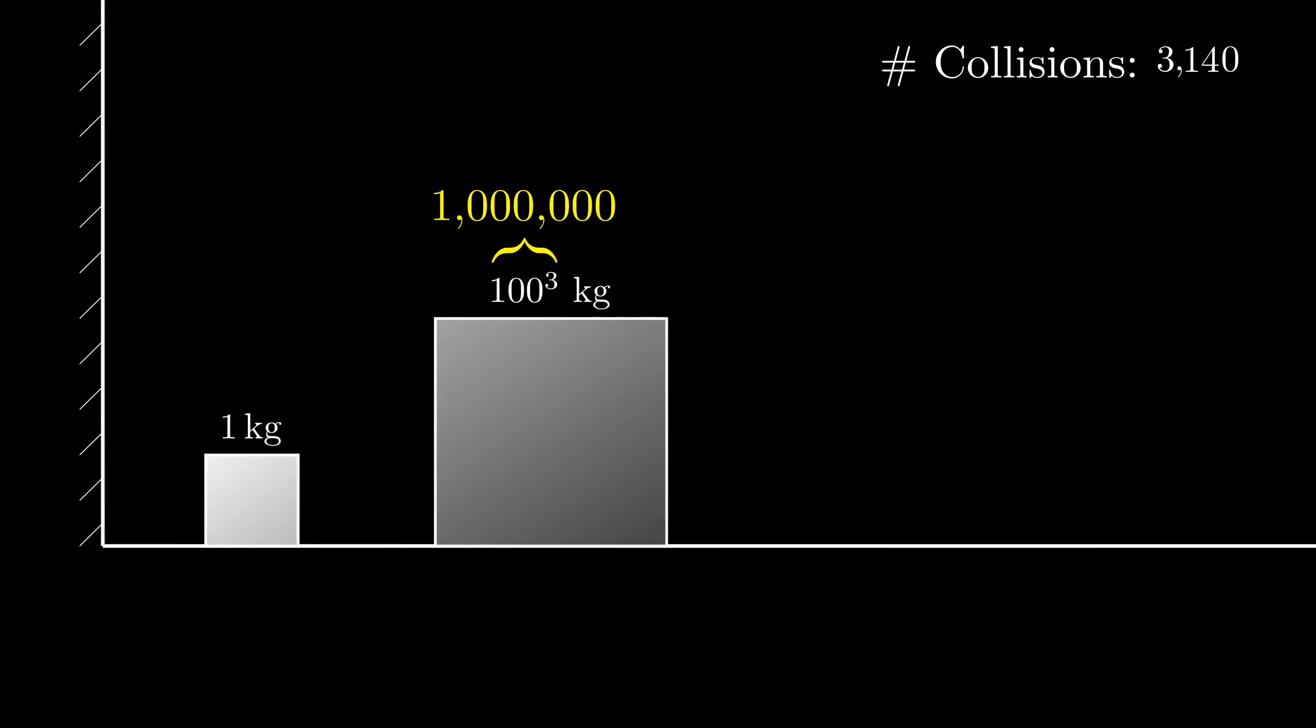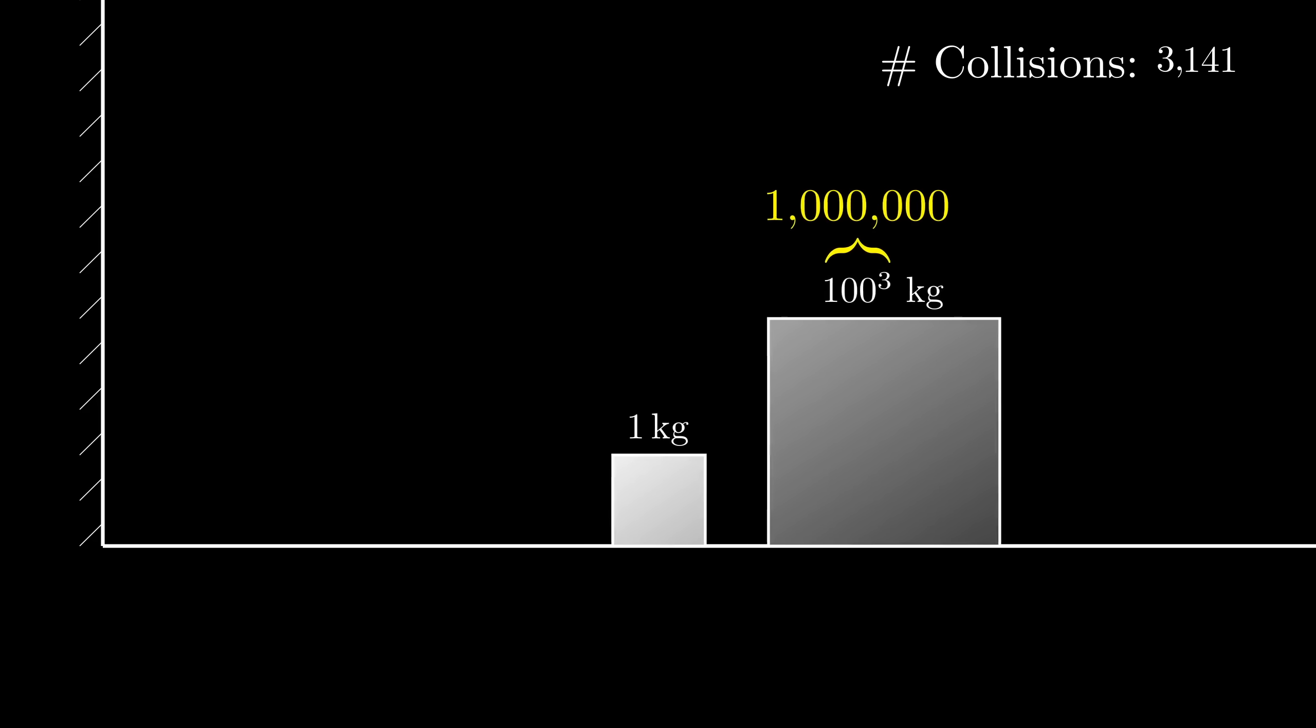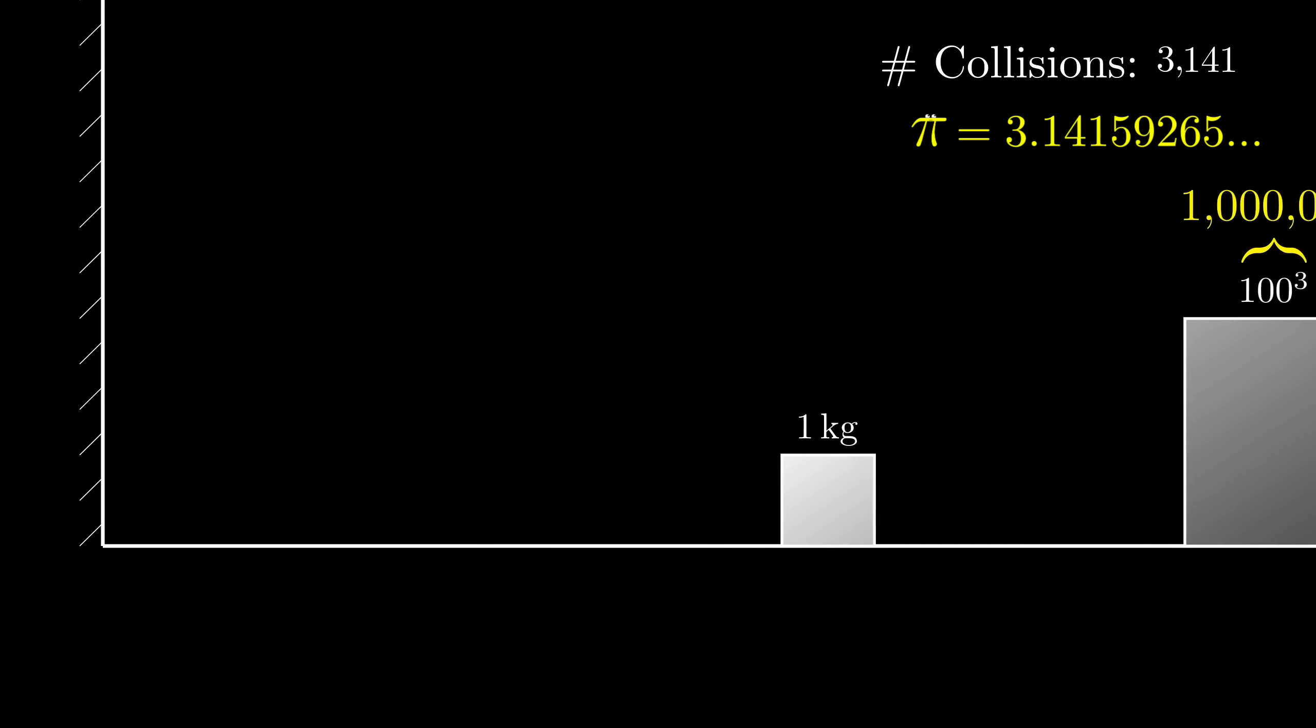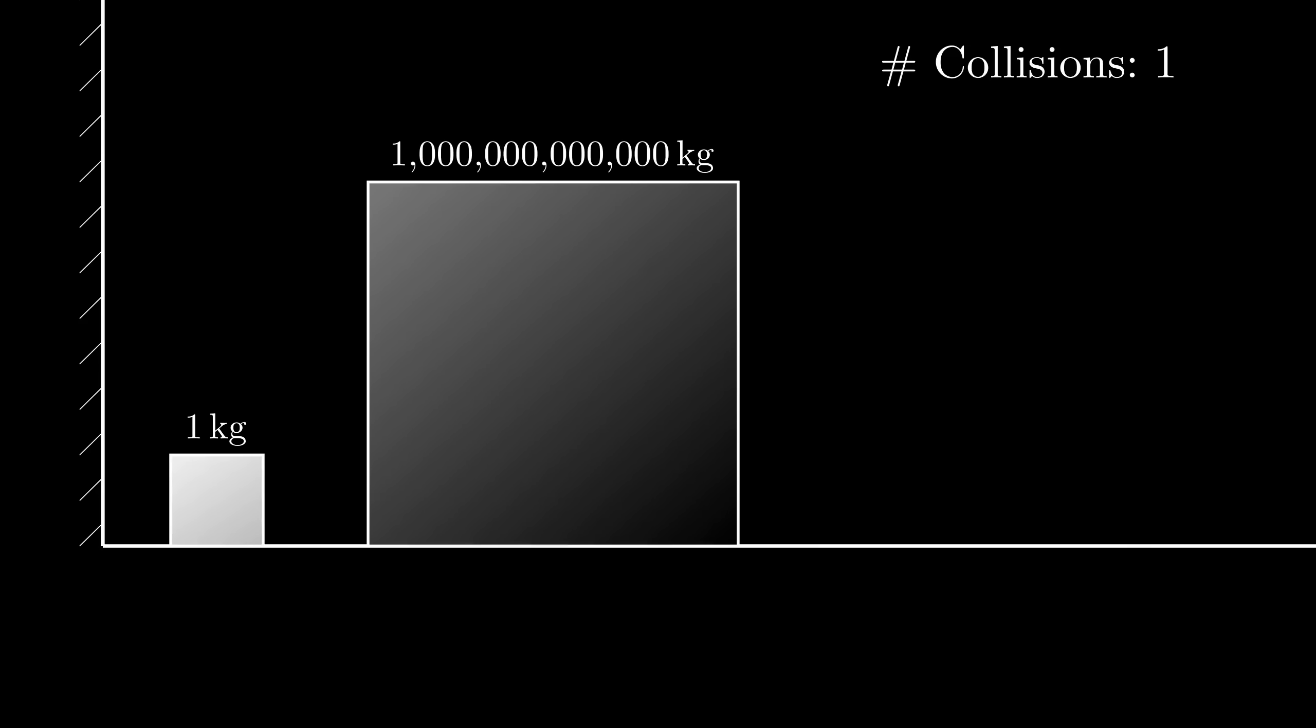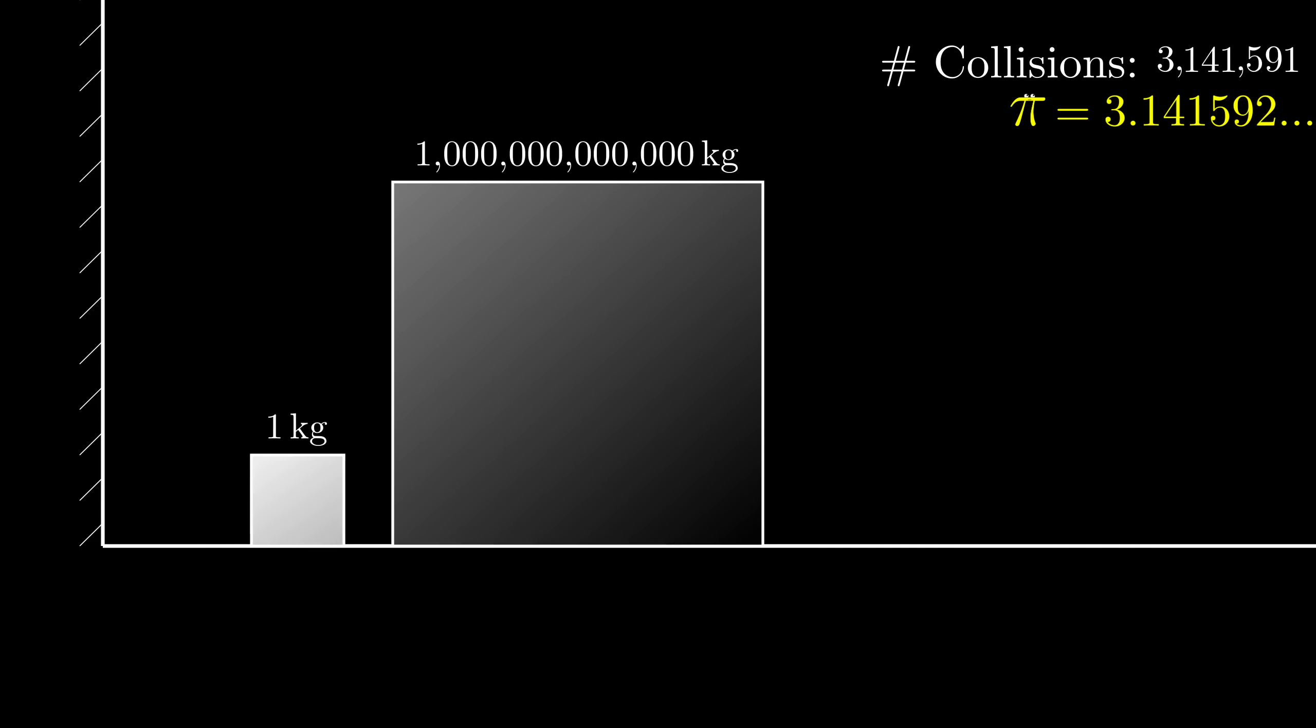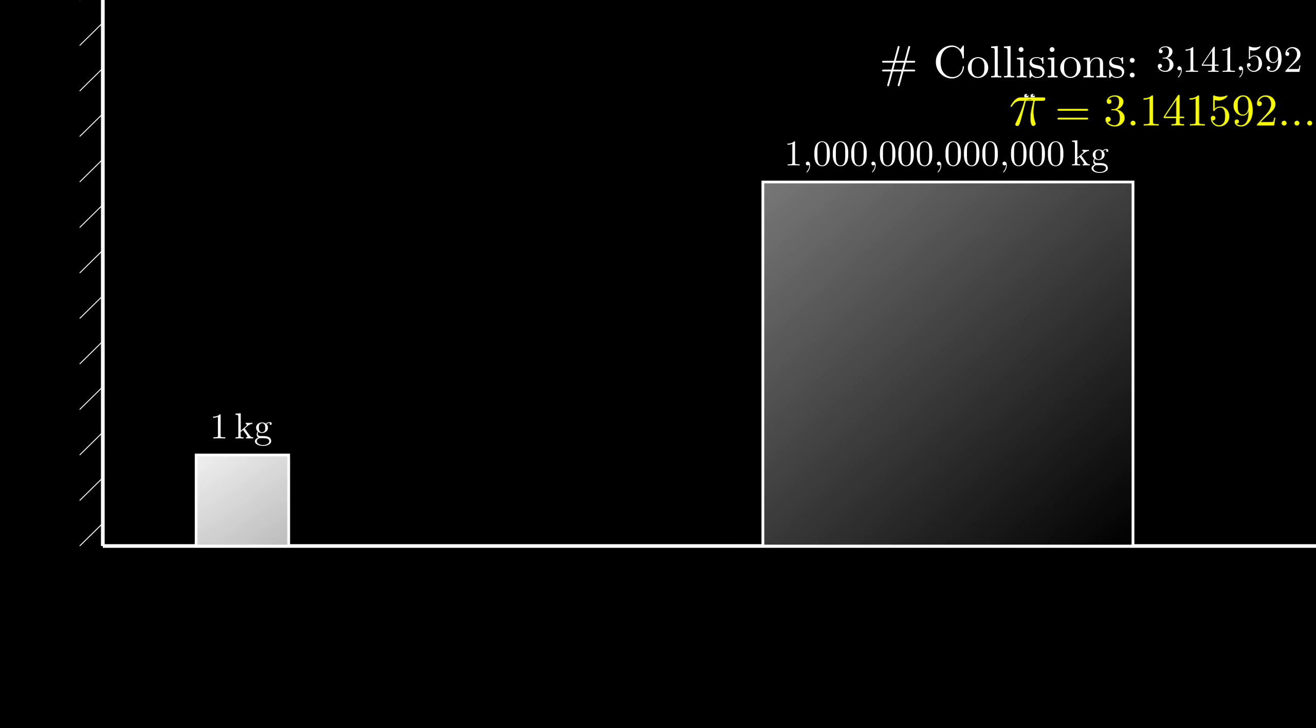The total number of collisions, including those between the second mass and the wall, has the same starting digits as pi. In this example that's 3141 collisions. If that first block was a trillion times the mass, it would be 3,141,592 collisions before this happens, almost all of which happen in one huge unrealistic burst.